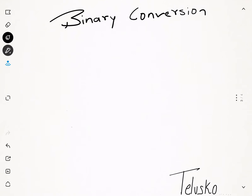Welcome back. This is Navin Reddy from Thalescore Learnings. In this video we'll talk about binary conversions. Computers understand only one language, which is binary — either one or zero. You cannot communicate with a computer using normal numbers or English; you have to use binary numbers. So even if you want to say five to a computer, the computer will not understand five — you have to convert that number five into binary format, which is 101.